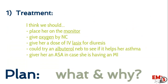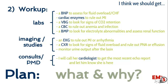The first part of the plan is treatment — tell me what you want and why. For this patient: oxygen, Lasix for diuresis, an albuterol neb, and aspirin just in case she's having an MI. The second part is the workup — don't just list what you want, tell me why. For labs: a BMP to assess for fluid overload; cardiac enzymes to rule out MI; a CBC to rule out anemia and signs of infection that could be causing shortness of breath. Then state what imaging studies and consults you want.